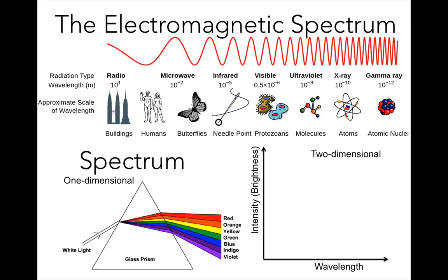Just to reiterate: when we say spectrum for pretty much the rest of this class, unless we specifically say the electromagnetic spectrum, we're talking about taking light from an object and spreading it out into its component colors. The reason these are so important is that really a huge portion of astronomy — maybe 75% — is based on spectra, taking light from a source and breaking it into its component colors, and using that to diagnose what's going on with the object.